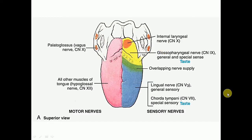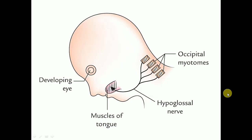In addition to the sensory supply, all the muscles of the tongue are supplied by the hypoglossal nerve. All the muscles of the tongue are derived from the cranial-most somites, known as the occipital myotomes. The occipital myotomes give rise to the muscles of the tongue, and this explains their nerve supply by the hypoglossal nerve, which is the nerve of these myotomes.